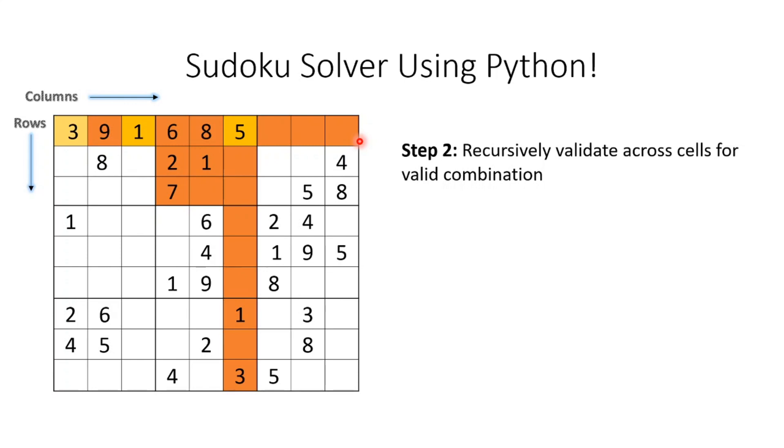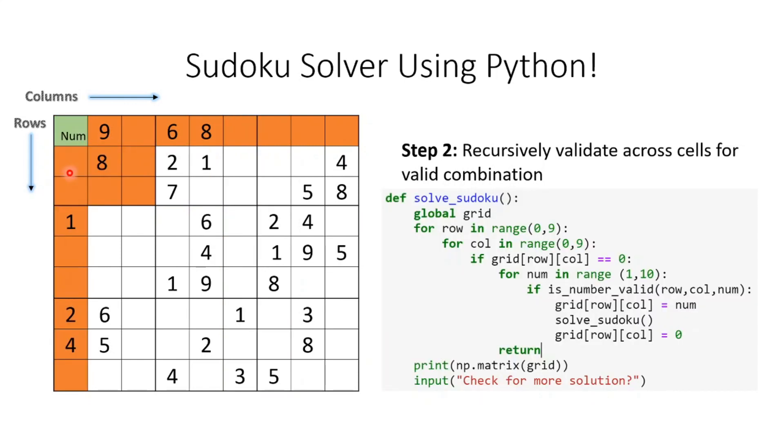Now let's see the code for implementation. I've written another solver function. Again I initialize the grid as global because I don't want to lose the grid value once it gets updated. I want to retain whatever updates I'm making to the grid, so I'm declaring it as global.